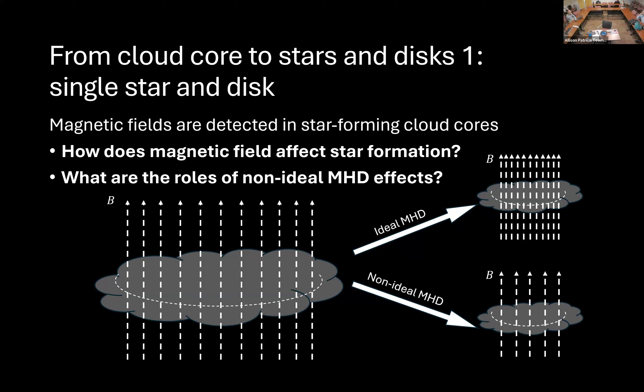To give background on non-ideal MHD: imagine a cloud threaded by magnetic field. Ideal MHD means the magnetic field lines are perfectly coupled to the gas — if you compress the gas, the field lines are retained and the magnetic field strength increases. Non-ideal MHD means the magnetic field can be decoupled from the gas, so if you compress the cloud, some magnetic field can be removed, and the field strength won't increase as much. The question is: how does this removal or redistribution of magnetic field affect star formation?